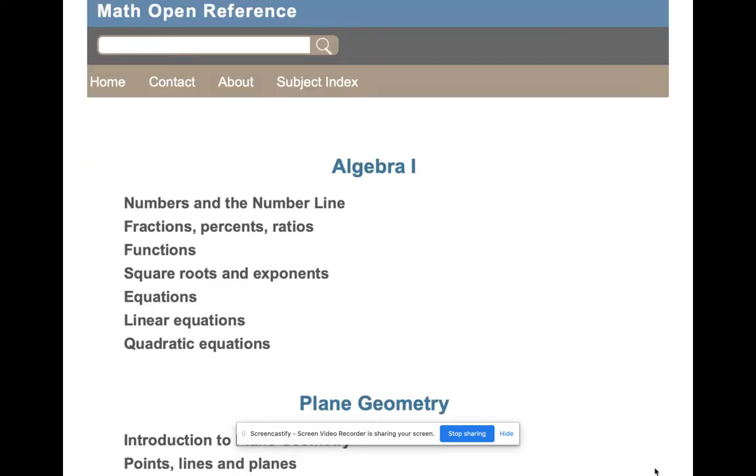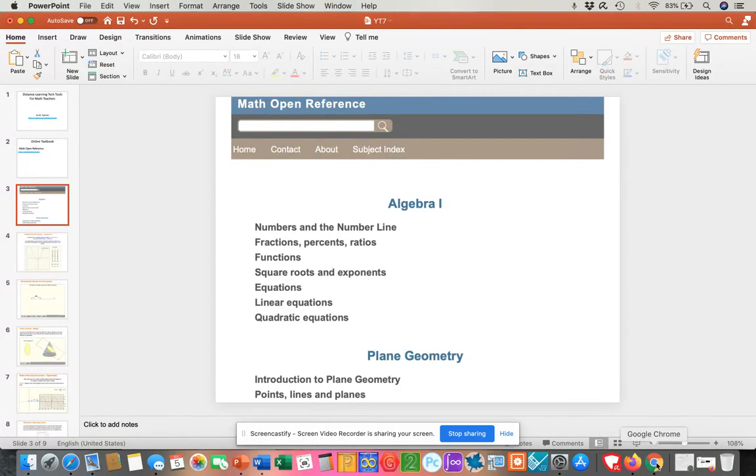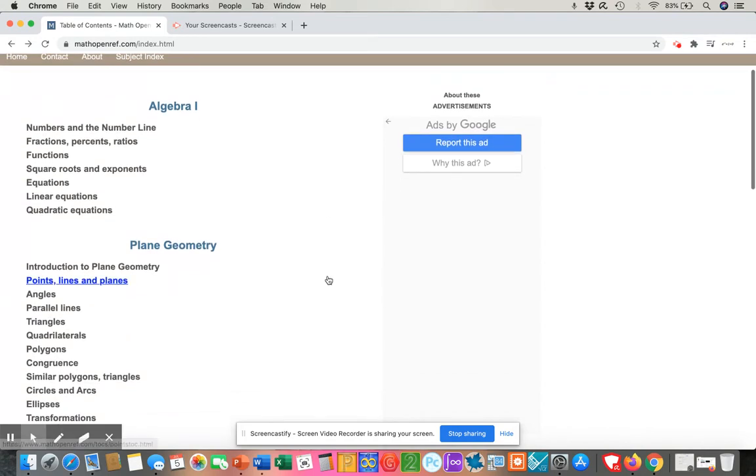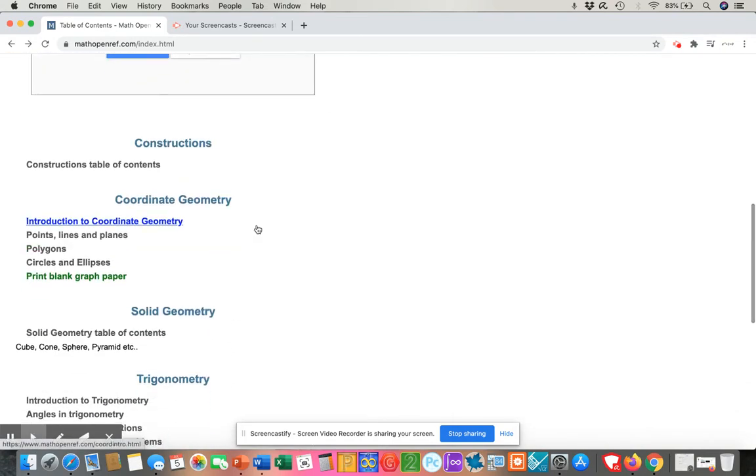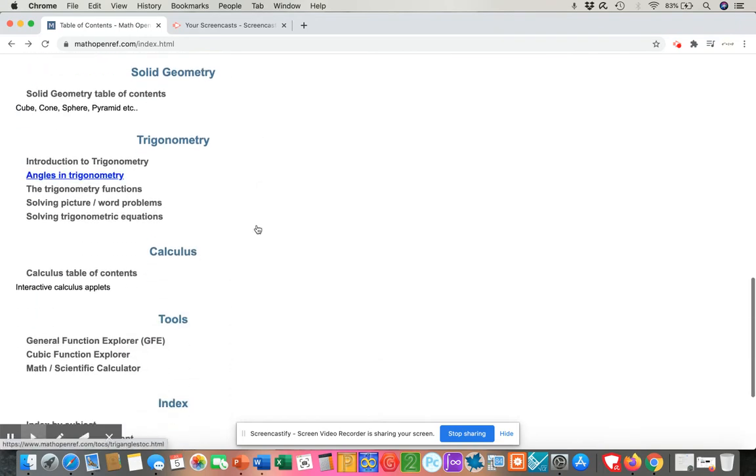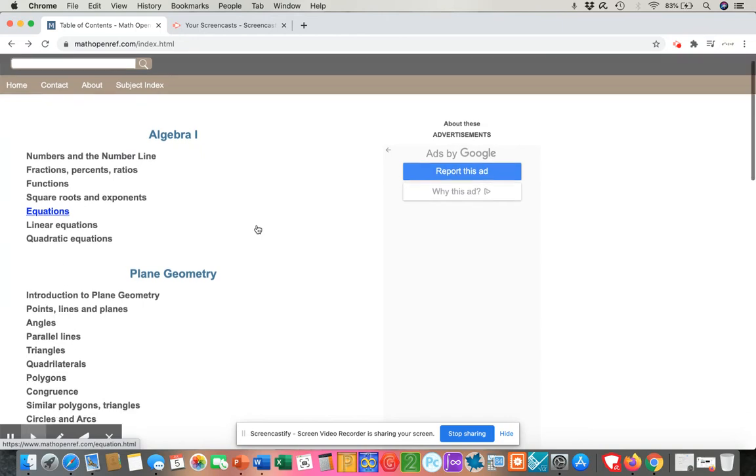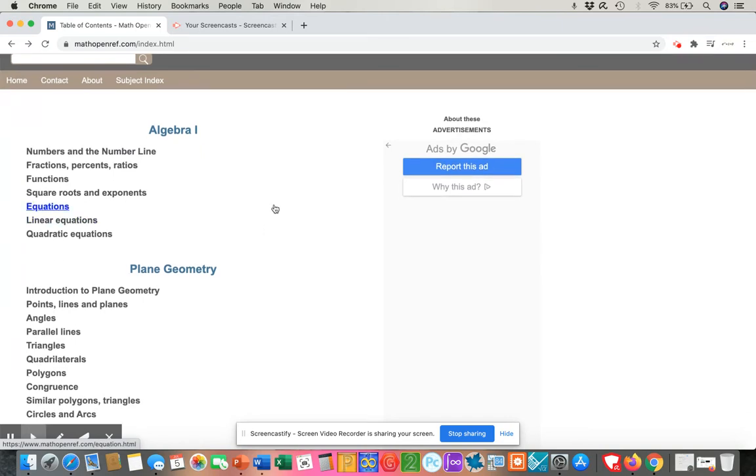So when you go on their website, this is what you're going to get. Let me show you what it actually looks like. So once you go on the website, you have options for algebra, geometry, construction, solid geometry, trig, and calc. So I wanted to show you what this looks like to give you an idea of how you can use it with your students.